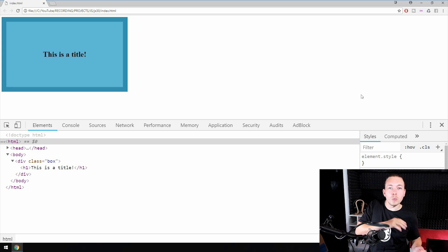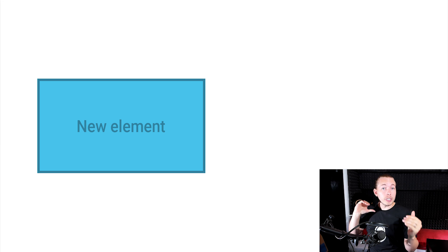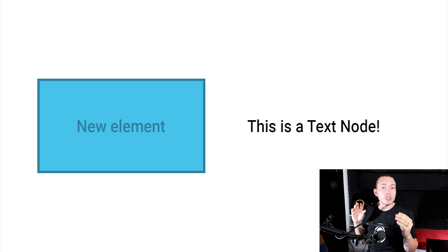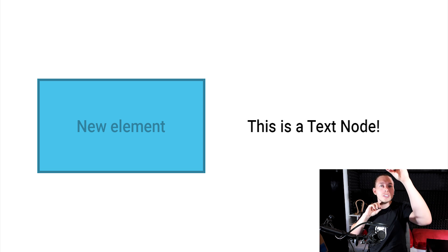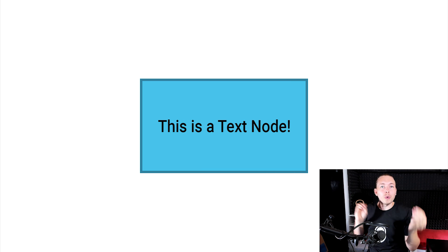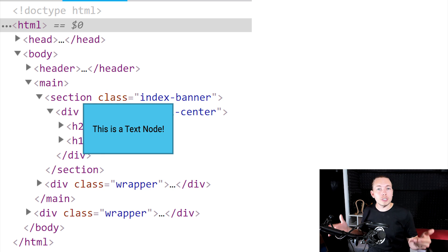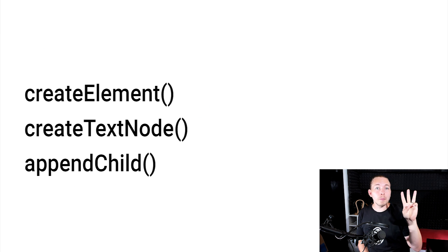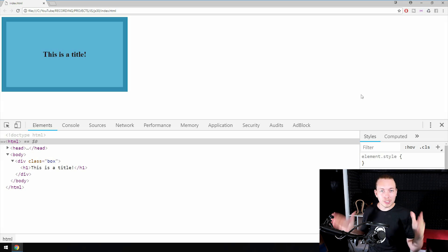The way we do it is: first, using JavaScript, create the new element we want to insert into the DOM. Then we create the content we want to go in between that element. Then we need a separate method to attach those two together. And then we need a fourth method to take the new element and insert it into the DOM. During this process you're going to learn three new methods: createElement, createTextNode, and appendChild.